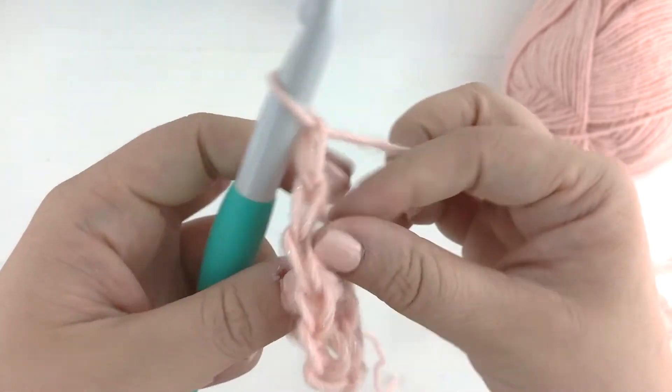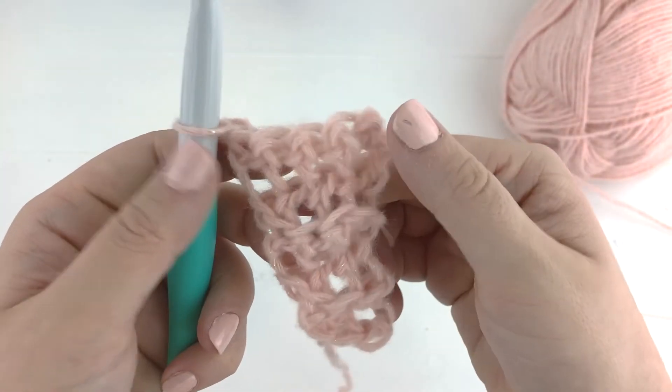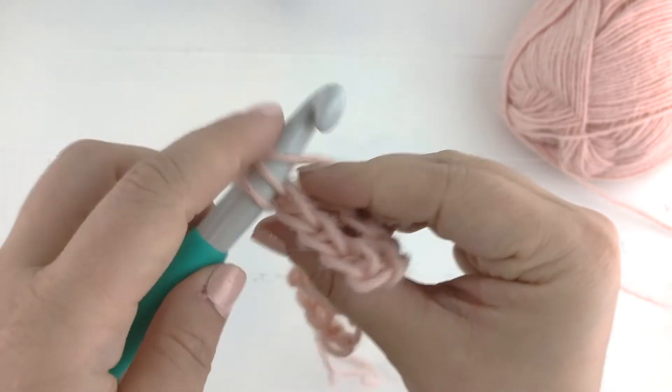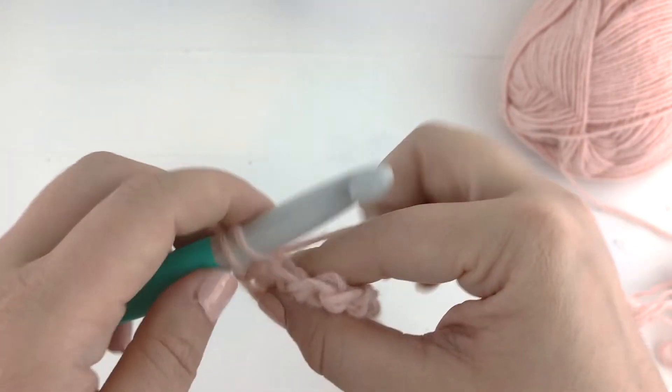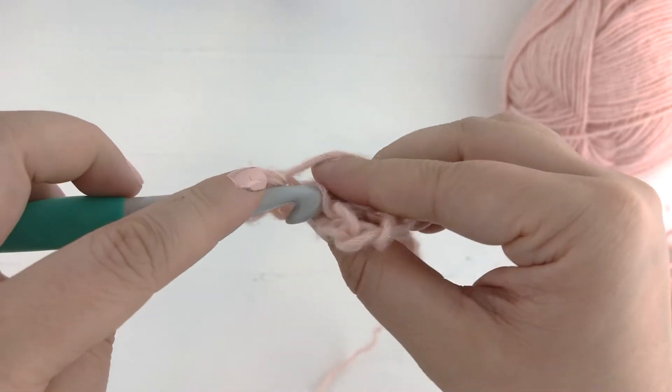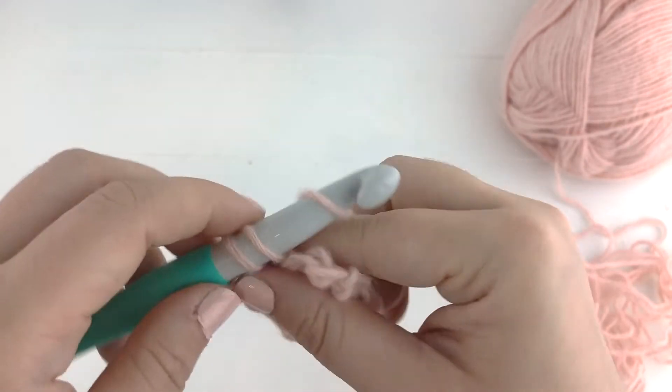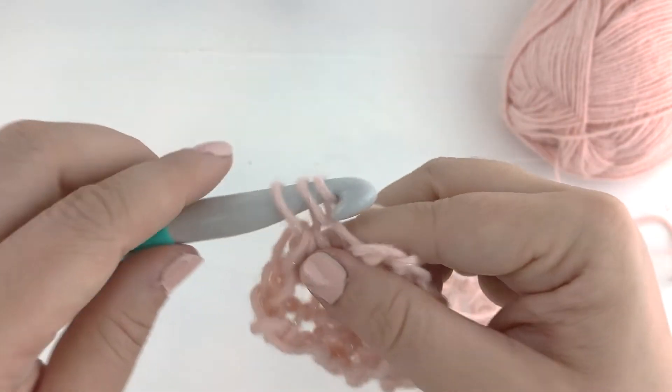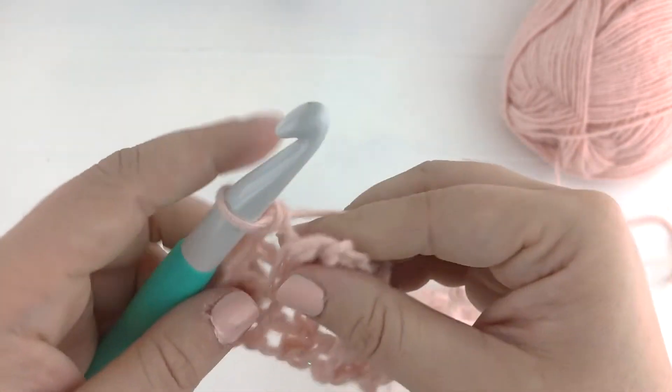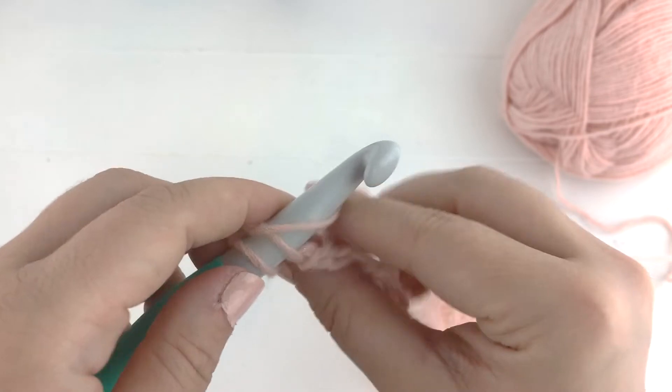So I will continue repeating this until we have a total of 90 rows. So on row eight we are just single crocheting in every stitch across, always in the back loops only. I'm going to sound like a broken record but that's the part that really adds that beautiful ribbed texture.